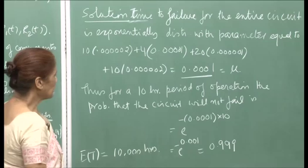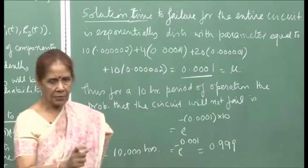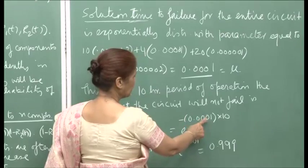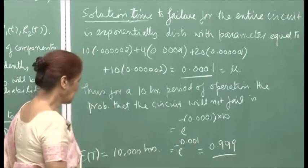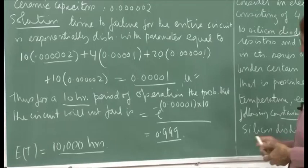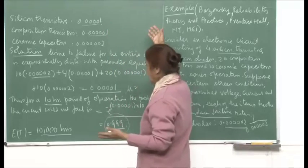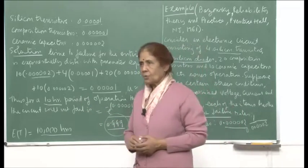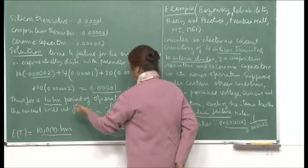For a 10-hour period of operation, the probability that the circuit will not fail is e^(−μ×10) = e^(−0.0001×10) = e^(−0.001) ≈ 0.999. The expected time to failure E(T) is 10,000 hours. The probability is very high, obviously, because these diodes and capacitors have mean lifetimes in thousands of hours — so for a 10-hour period, you do not expect the system to fail.